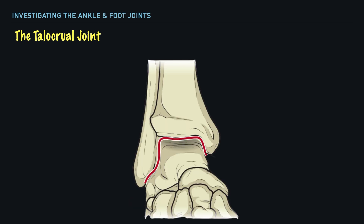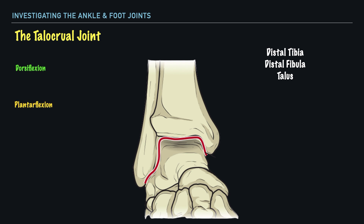Next, let's look at what we refer to as the true ankle joint. The name of this joint is the talocrural joint, and it's made up of the articulations between the talus, the distal tibia, and the distal fibula. It's here that we have the production of movements such as dorsiflexion and plantarflexion — approximately 15 to 20 degrees of dorsiflexion and 50 degrees of plantarflexion. This joint is classified as a ginglymus joint.